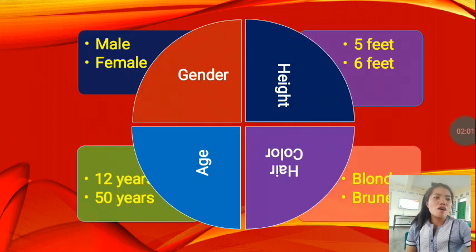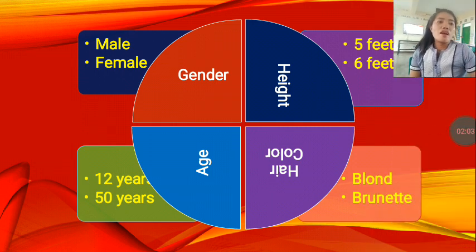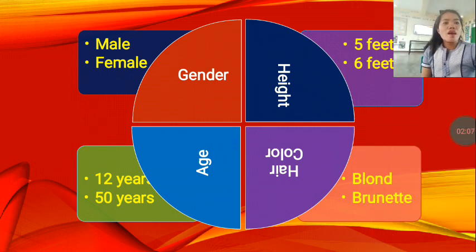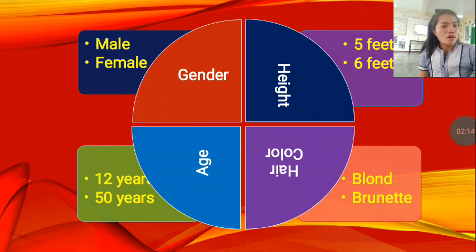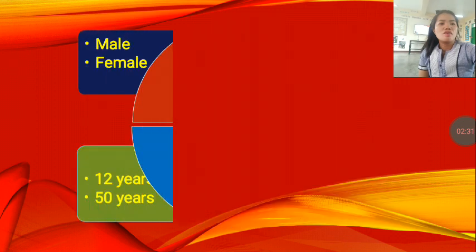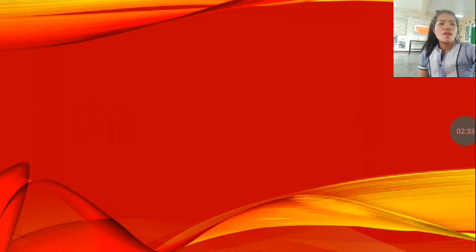You could also have the hair color. Example of hair color, we have blonde, brunette, or we could also have dark or black, just like me. So these are examples of the attributes.